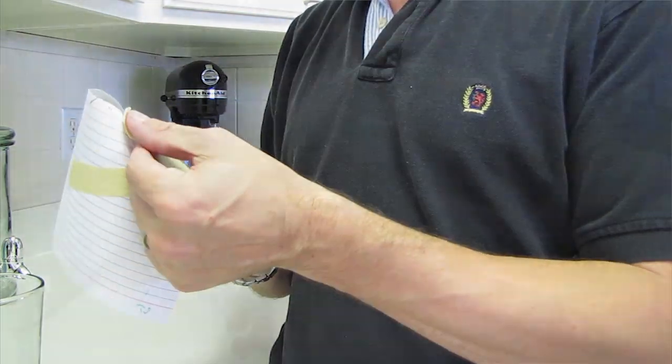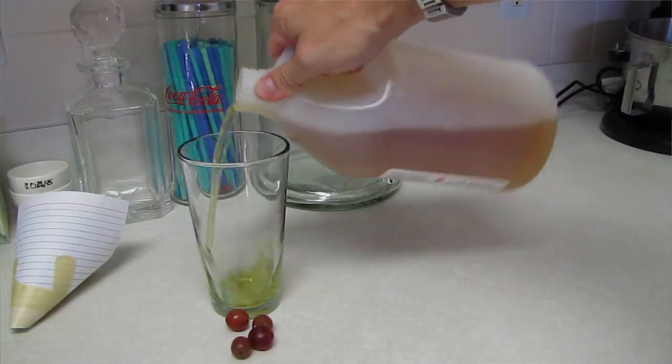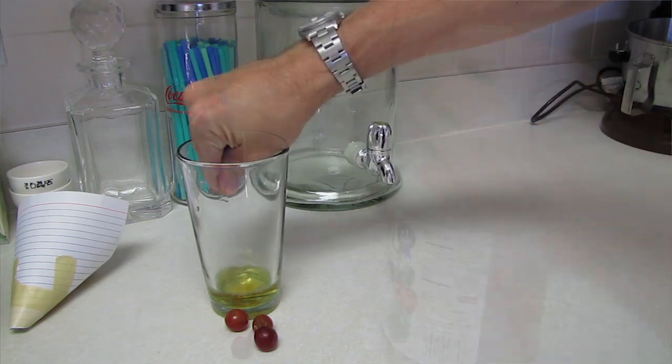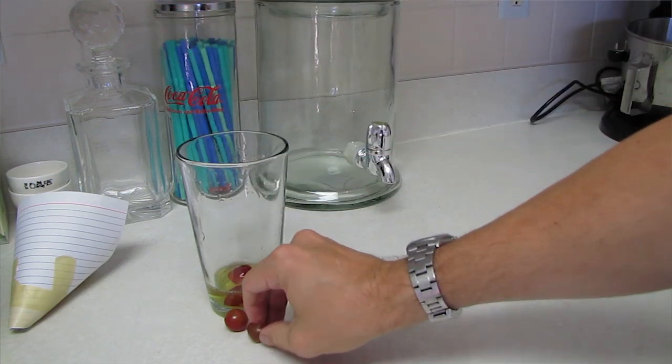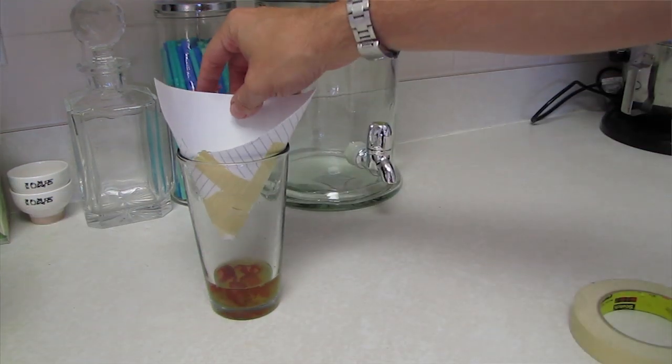I'm going to pour about a quarter of an inch of vinegar in the bottom of the glass and throw the smashed up grapes down in the bottom there, or whatever piece of rotten fruit that you're using. Drop it in there, put the funnel down in the top.